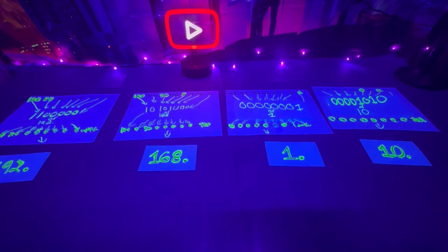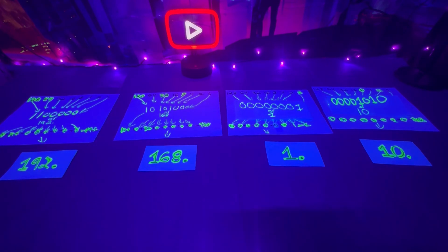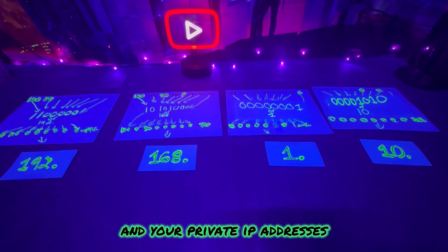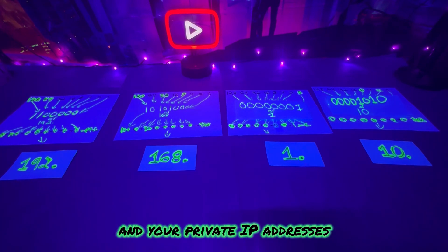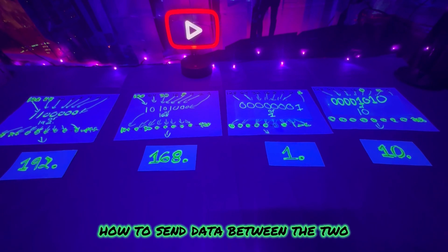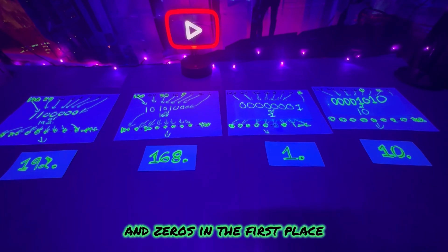As we went through the video explaining how we got each and every one of these, we also discussed your public and your private IP addresses — the difference between the two — and how we use NAT to connect your public and private IP addresses, how to send data between the two. We also went over binary and why we use ones and zeros in the first place.